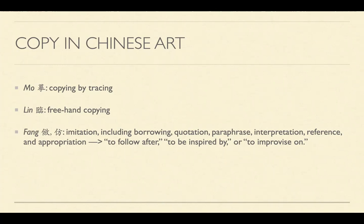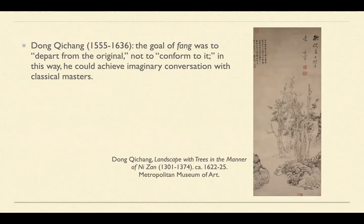In 17th century art discourse, fang denoted a wide range of meanings, including borrowing, quotation, paraphrase, interpretation, reference, and appropriation. As Katherine Burnett argued, fang was best translated as 'to follow after,' 'to be inspired by,' or 'to improvise on.' For literati painter Dong Qichang, the goal of fang was to depart from the original, not to conform to it. In this way, he could achieve an imaginary conversation or spiritual communion with classical masters.